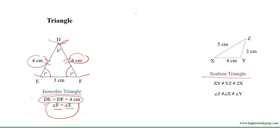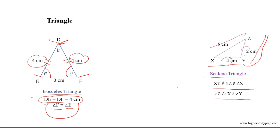A scalene triangle is a triangle that has three unequal sides, which gives three unequal angles as well, because angles opposite to unequal sides are also unequal. For example, in triangle XYZ, the lengths of sides XY, YZ, and ZX are 4, 2, and 5 respectively. So triangle XYZ is a scalene triangle.